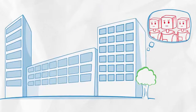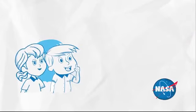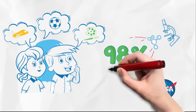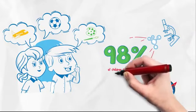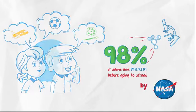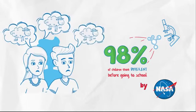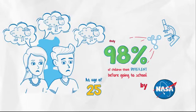Only the industries have changed. A study by NASA shows that 98% of children think different before they start going to school. As they go through this education system, at 25 years of age, only 2% think different.